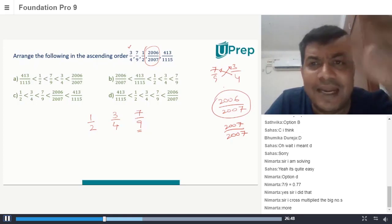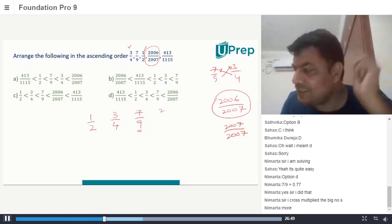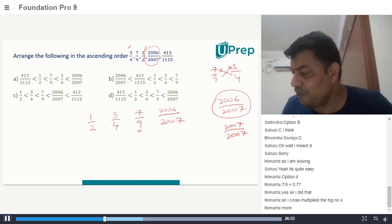More, of course more. I need not calculate. The moment I see this number 2006/2007, I can say it will be more than this, so it should be 2006 divided by 2007.